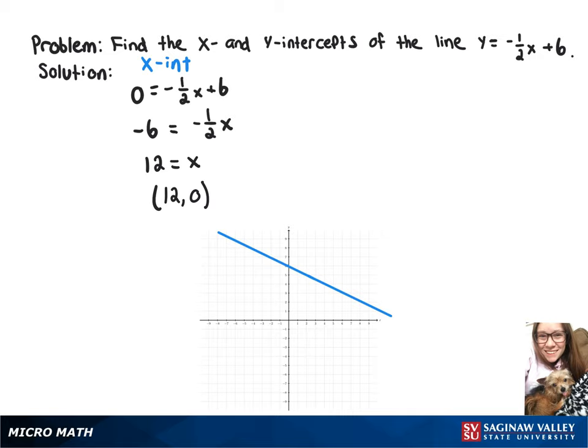Now to find our y-intercept, we're going to sub 0 in for x. That'll give us y equals negative one-half times 0 plus 6, or just y equals 6.